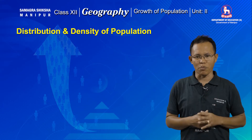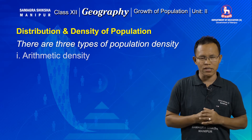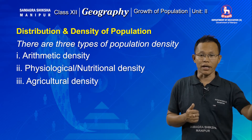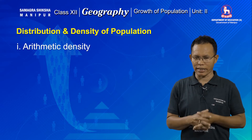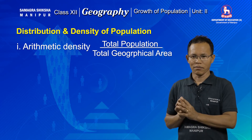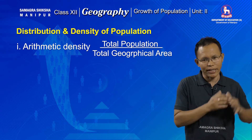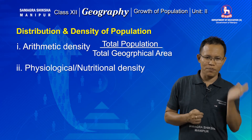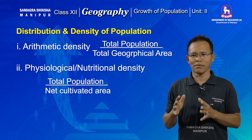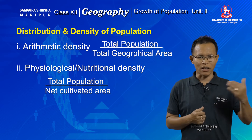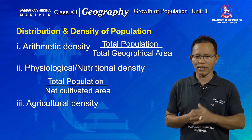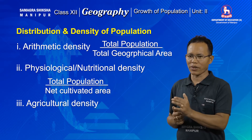There are three important types of population density. The first is arithmetic density, which is calculated as total population divided by total geographical area. The second is physiological or nutritional density, which refers to the number of people living per unit area of cultivable land. The third is agricultural density, which refers to the number of persons engaged in agricultural activity per square unit of cultivable land.